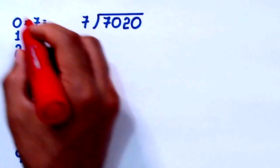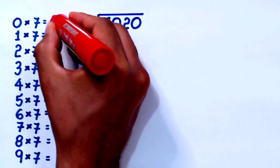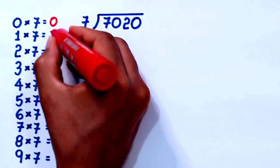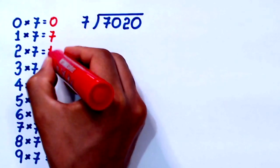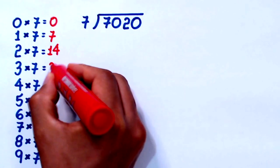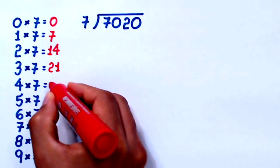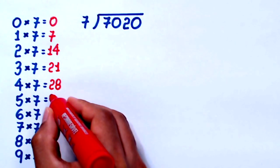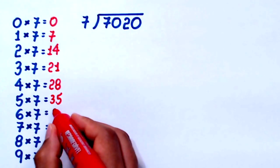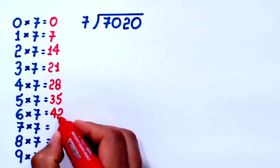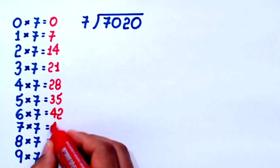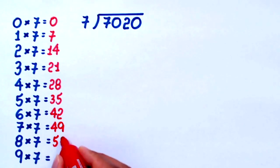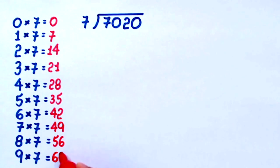0 times 7 equals 0 — 7 not even once. 1 times 7 is 7. 2 times 7 equals 14. 3 times 7 equals 21. 4 times 7 equals 28. 5 times 7 equals 35. 6 times 7 equals 42. 7 times 7 equals 49. 8 times 7 equals 56. 9 times 7 equals 63.